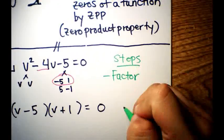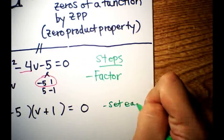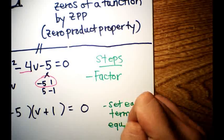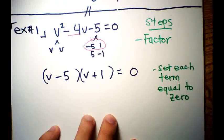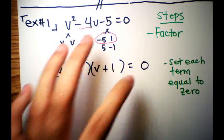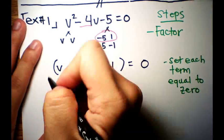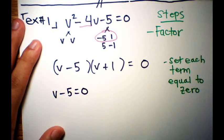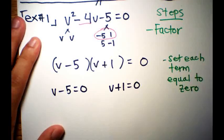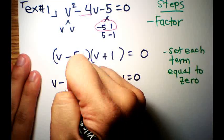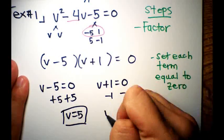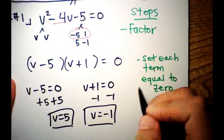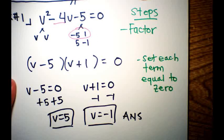Next step: set each factor equal to zero. That gives you two equations: v - 5 = 0 and v + 1 = 0. Solve each: add 5 to the first, v = 5; subtract 1 from the second, v = -1. Those are your answers for example number one.